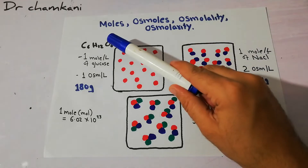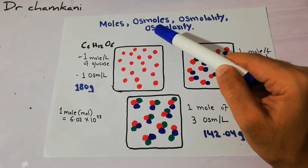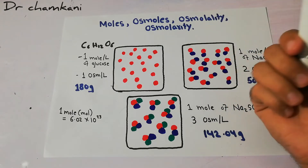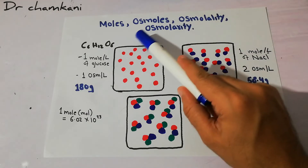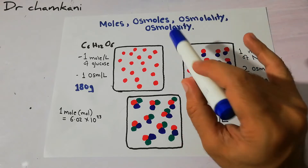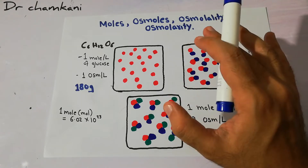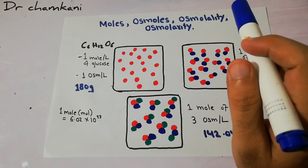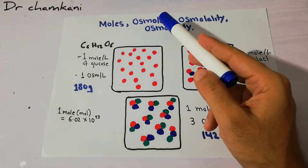Today we are going to start discussing the moles, osmoles, osmolality, and osmolarity. We have started discussing the basic principles of osmosis and discussed osmosis in the previous lecture. Now it's time to discuss these terminologies because all of them are very important in explaining the process of osmosis, which in turn is very important for fluid exchange and osmotic equilibrium. So what is basically a mole and osmol?